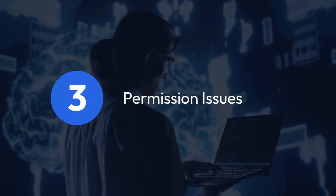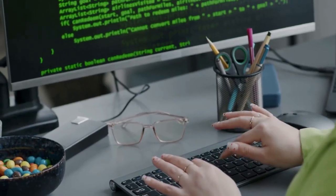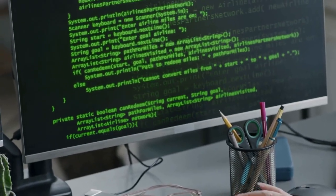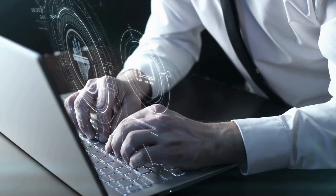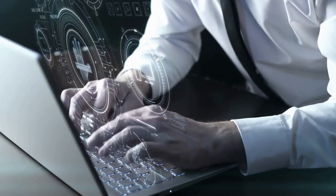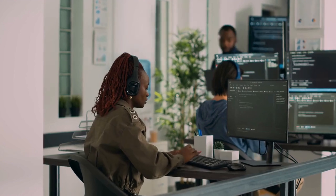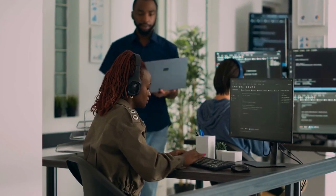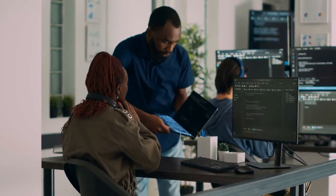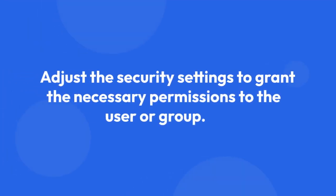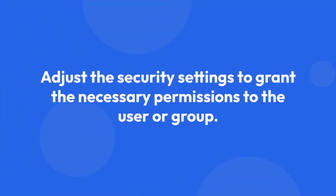3. Permission issues. Even if the key exists, your application might lack the necessary permissions to access it. Check the security settings of the registry key using regedit.exe. The user account your application is running under needs appropriate read access, at minimum, to open the key. Consider running your application with elevated privileges, as administrator, to see if that resolves the problem. If it does, then you need to adjust the security settings to grant the necessary permissions to the user or group.